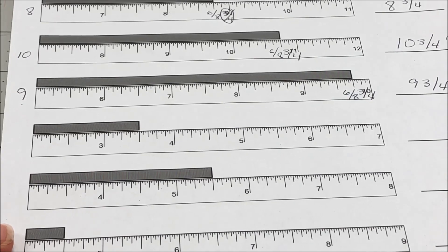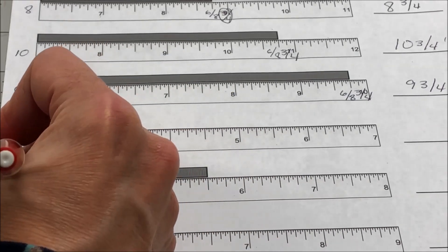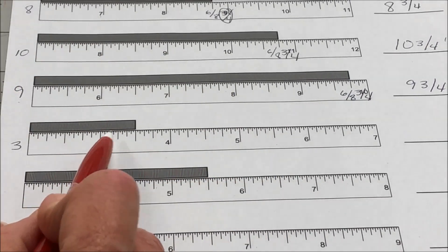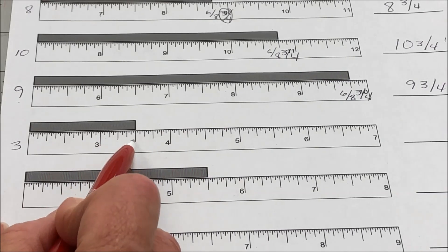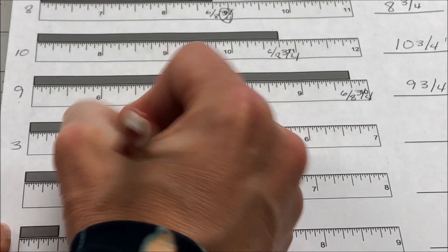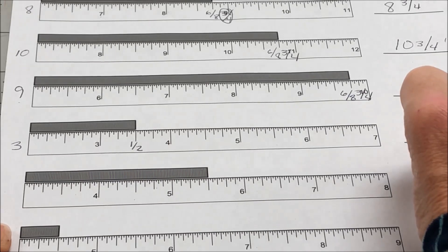The next one is going to be a 3. And then we've got an 8th, a quarter, 3/8ths and a half. So it'll be 3 and a half inches.